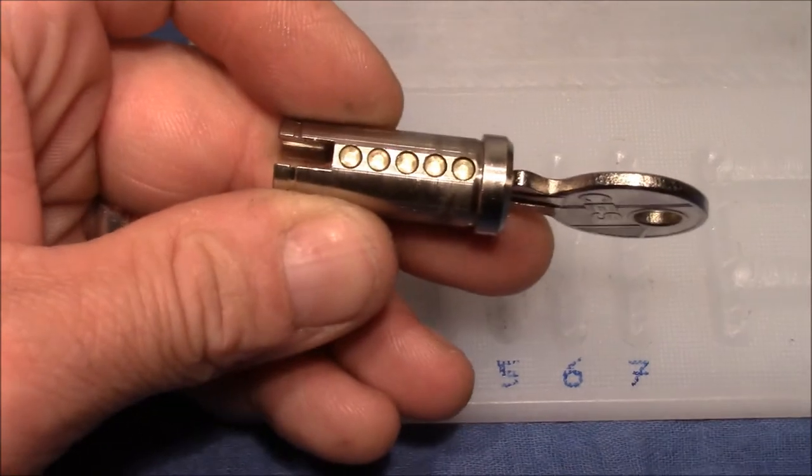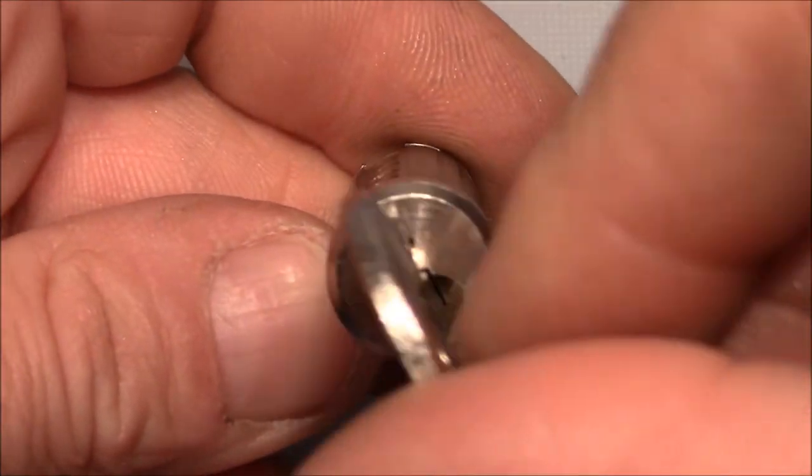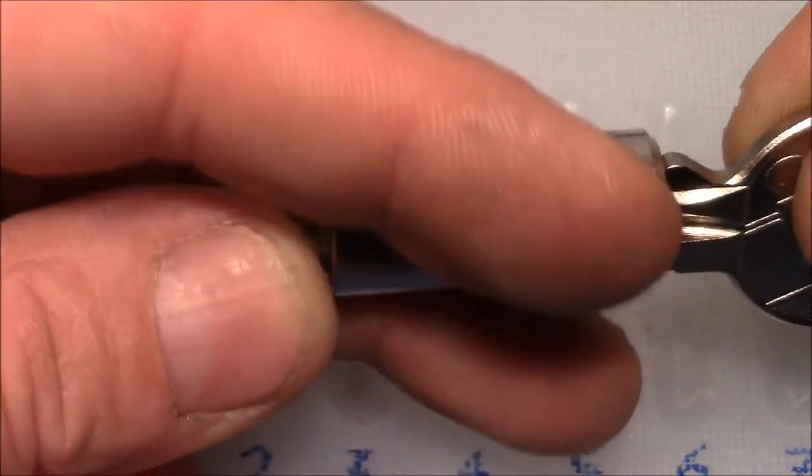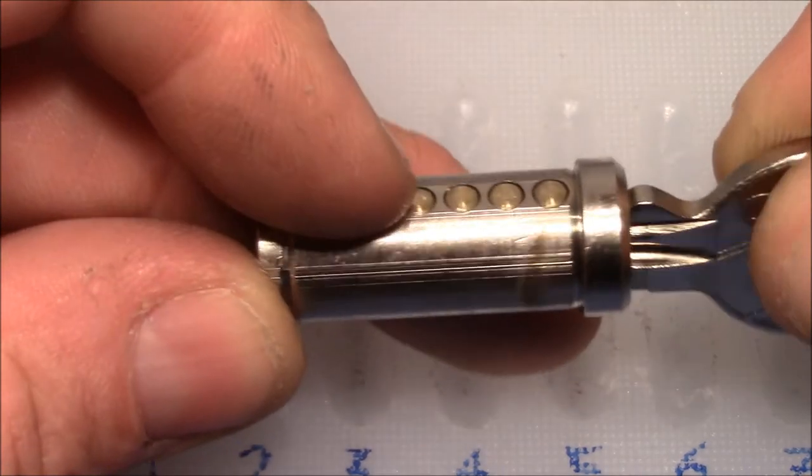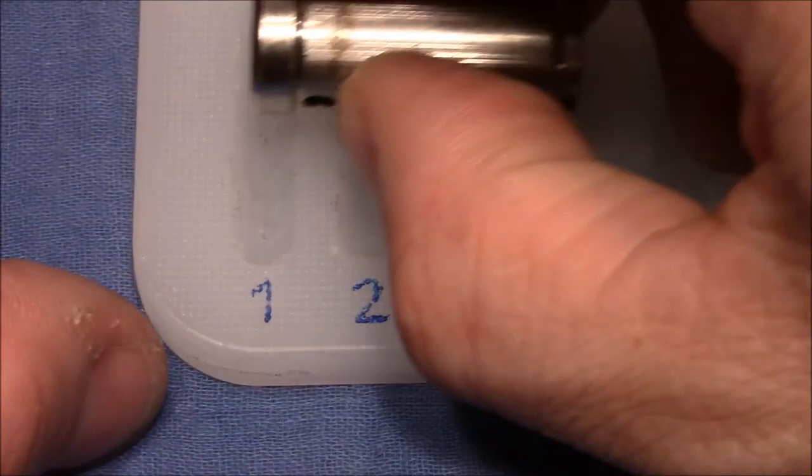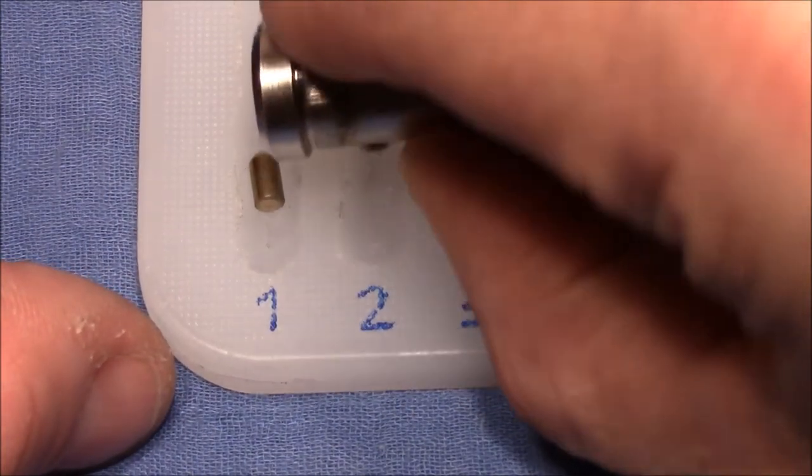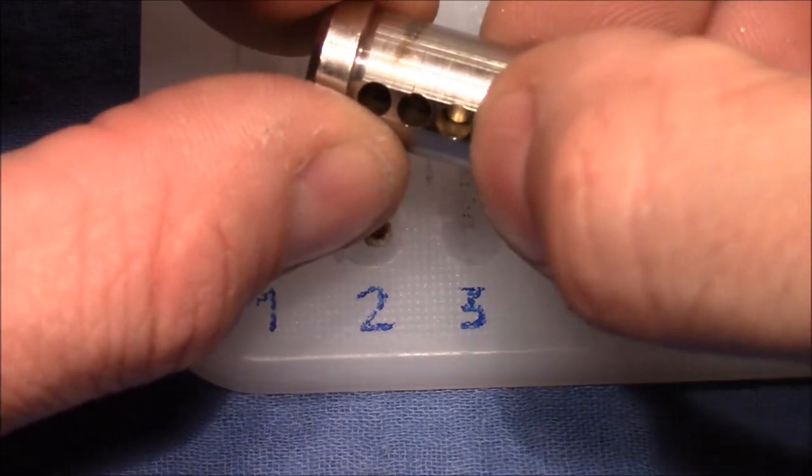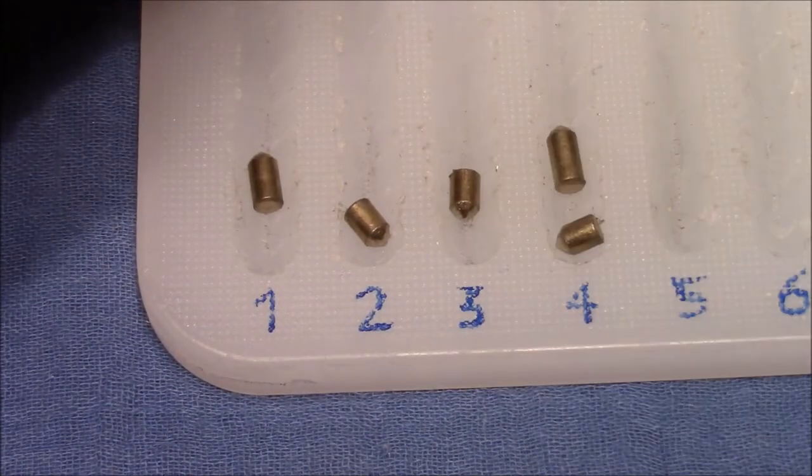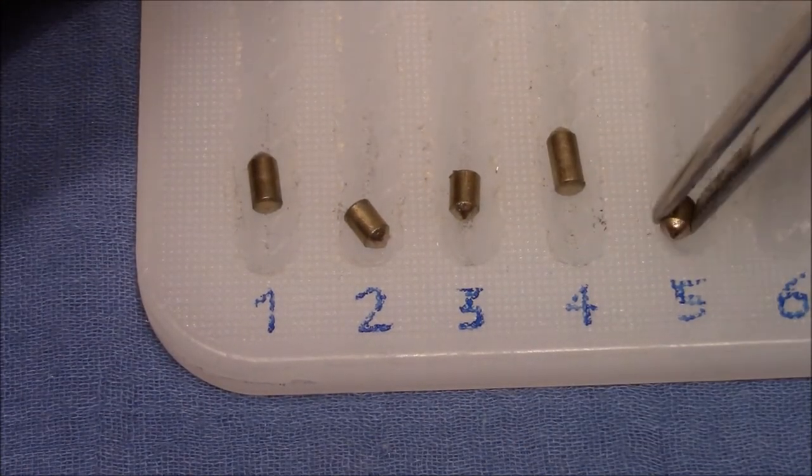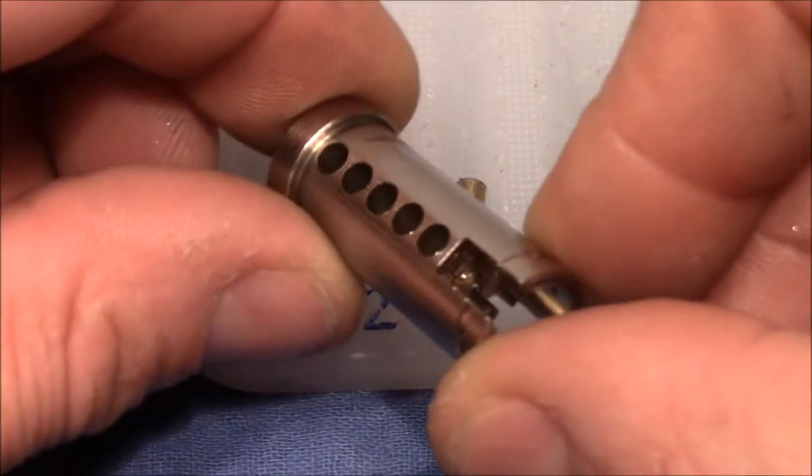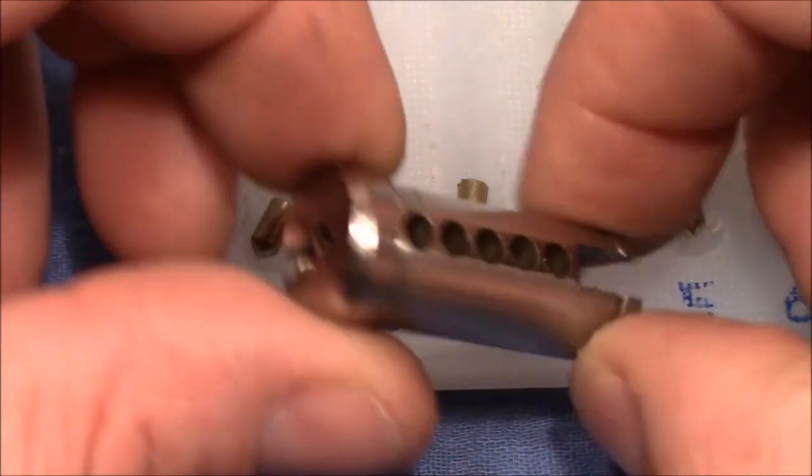Plug is flattened. You can make this out. So it's not perfectly round, there is a small flat surface. This makes picking a little bit easier as it makes the shear line wider or bigger. So all key pins are normal.